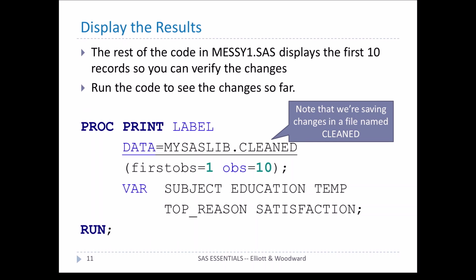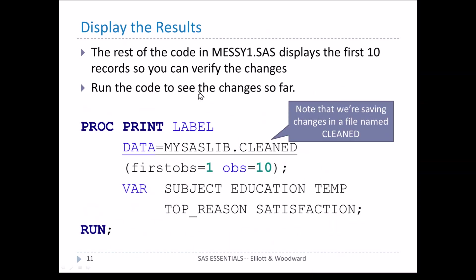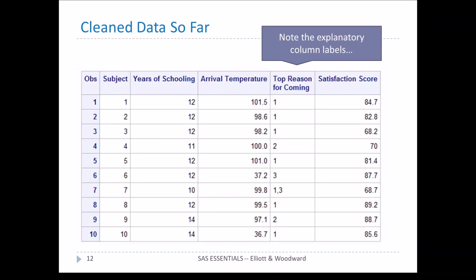The rest of the code in messy1.sas displays the first 10 records so you can verify the changes. We run PROC PRINT on the data set called 'clean', printing just the first 10 observations and selected variables. We can see the nice labels at the top — years of schooling, arrival temperature — but we still have issues: some arrival temperatures are in Celsius rather than Fahrenheit, and there are multiple answers where only one should appear.